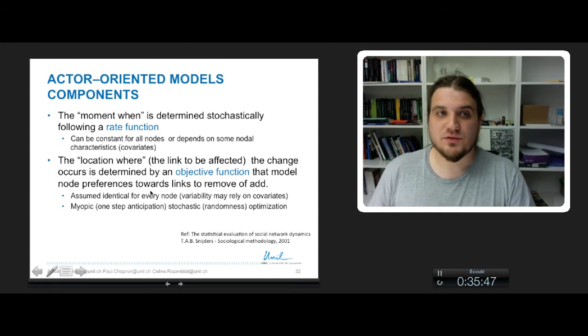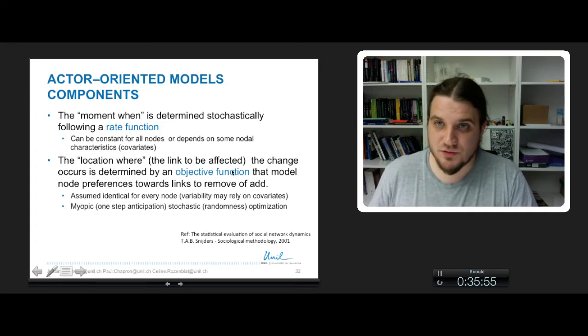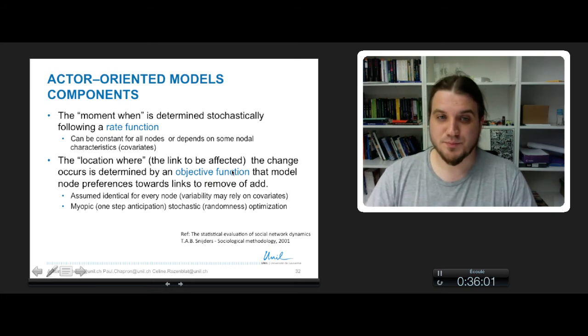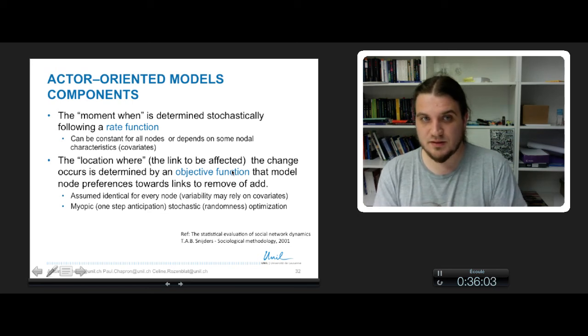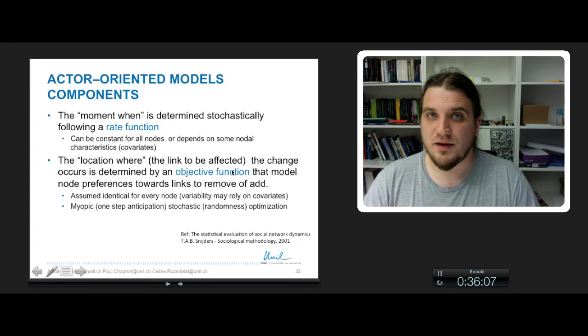So these are the two components that define an actor-oriented model. And we will see examples of specification of the objective function to model the preference of nodes in link creation or destruction. This objective function has been, at the origin, developed for social network analysis where nodes were people.